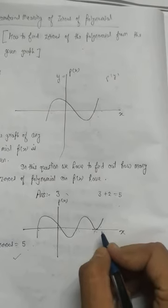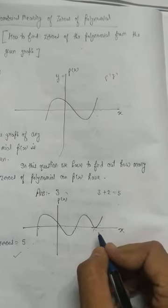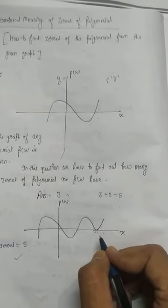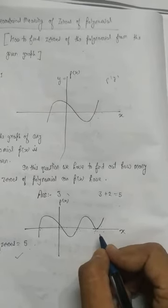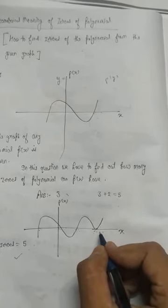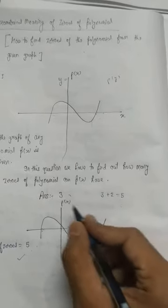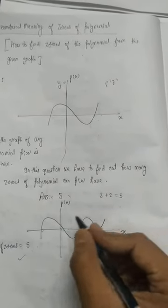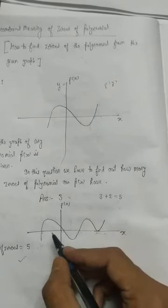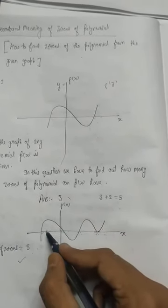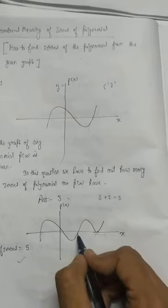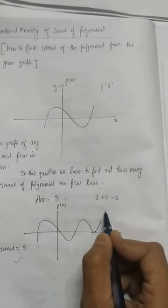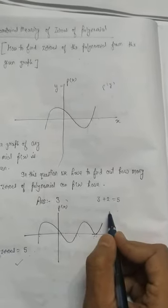Remember this point: whenever a graph touches any axis there will always be two zeros, and both two zeros will be equal. So counting completely, the answer will be five: one, two, three plus two.